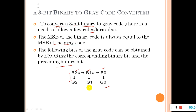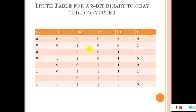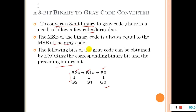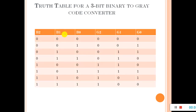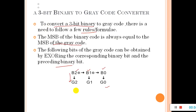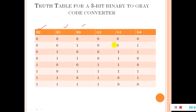This is the truth table for the three-bit conversion — that is B0, B1, and B2. By using that formula or rule, we are having the equivalent gray code. Let me take an example just for illustration.